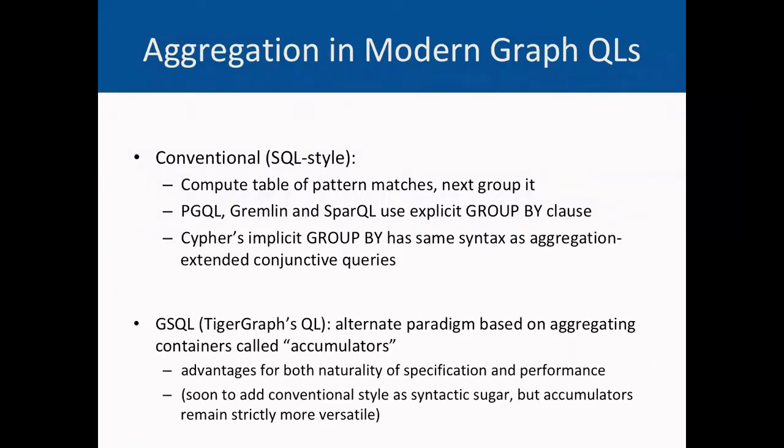So let's talk about aggregation first. Virtually all existing graph query languages specify aggregation in the conventional SQL style by means of an explicit GROUP BY clause, or sometimes, like in the case of Cypher, an implicit one that is really equivalent. In contrast, GSQL specifies aggregation using an alternate paradigm based on aggregating containers that we call accumulators, which brings advantages both in terms of the naturality of specifying the aggregation and in terms of supporting performant implementations. Moreover, the accumulator-based aggregation scheme is versatile and expressive enough that we can and will soon support the conventional GROUP BY clause as syntactic sugar.